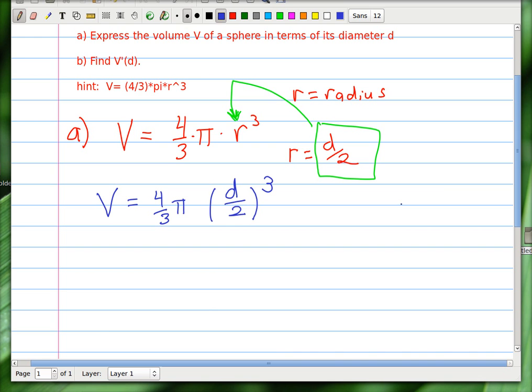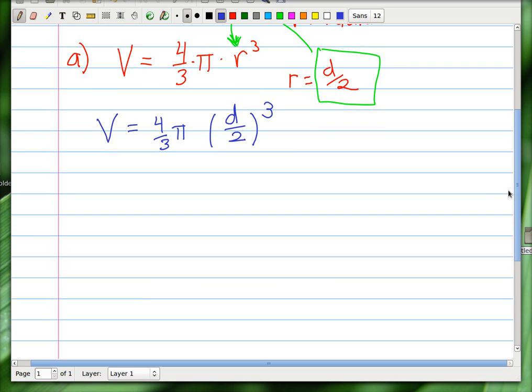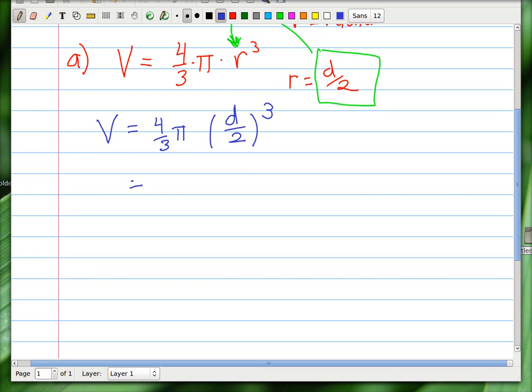Ok. And if you want to, you can simplify some and make a nice little home for d. So it's 4 thirds pi. And how does the cube work?